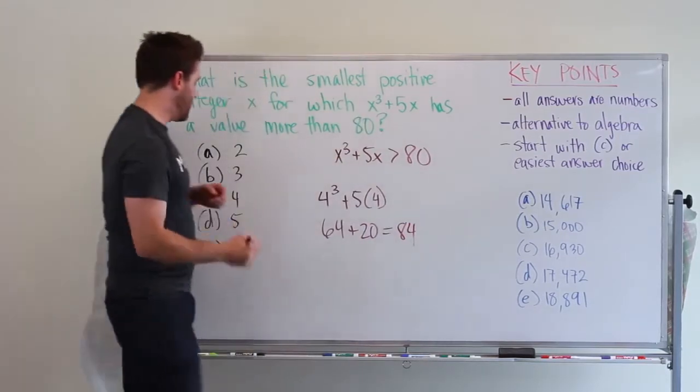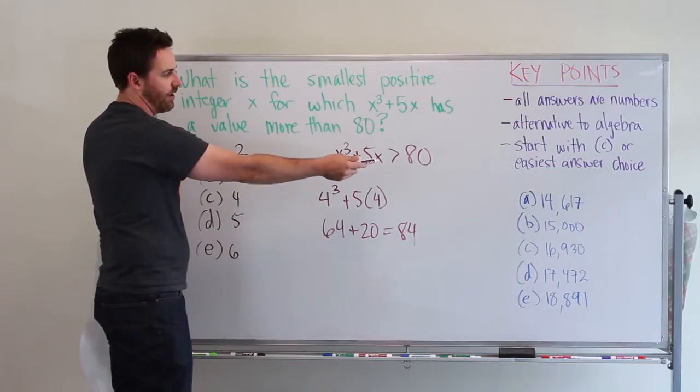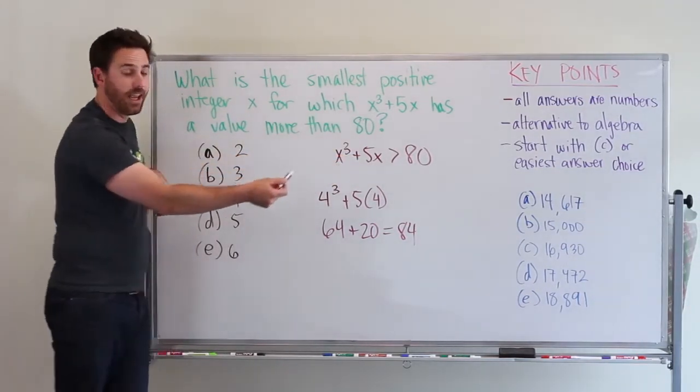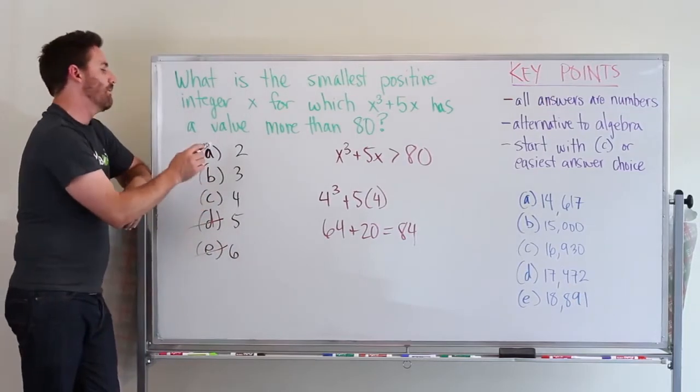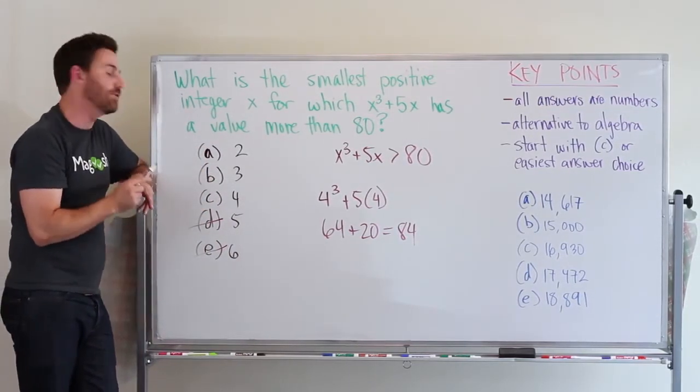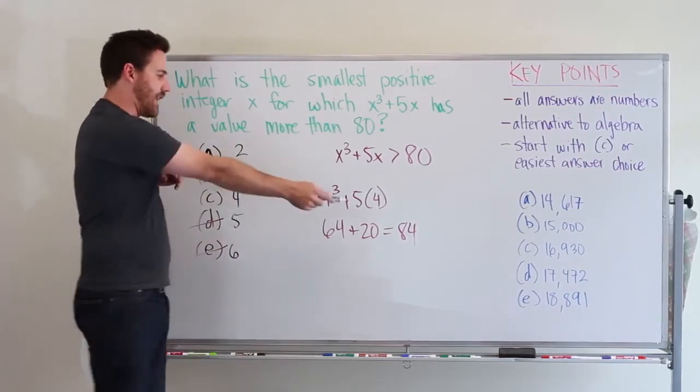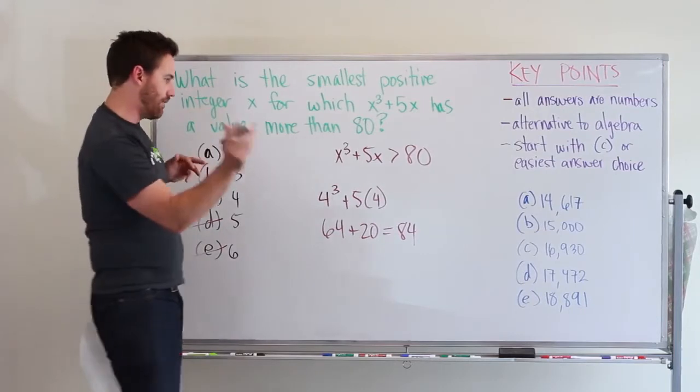So I know now that 4 is an integer that gives me a number greater than 80 when I plug it in. It might be C, but I want to check and make sure it's not 3. Maybe 3 gets me even closer to 80, and that would be the smallest integer to choose. So let's double check.